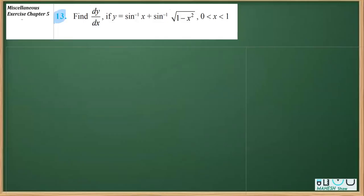On this question number 13 from the miscellaneous exercise chapter 5, we have to find dy/dx given that y equals sin inverse x plus sin inverse square root of 1 minus x squared.